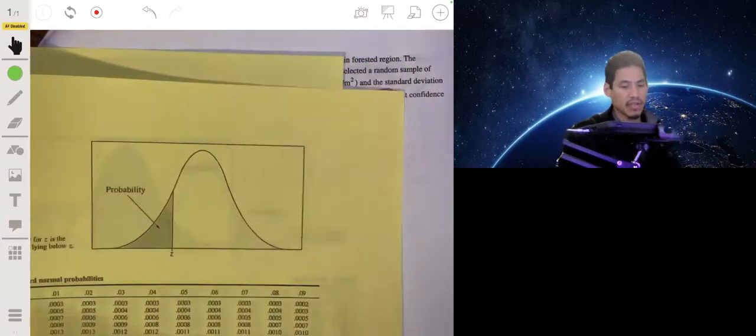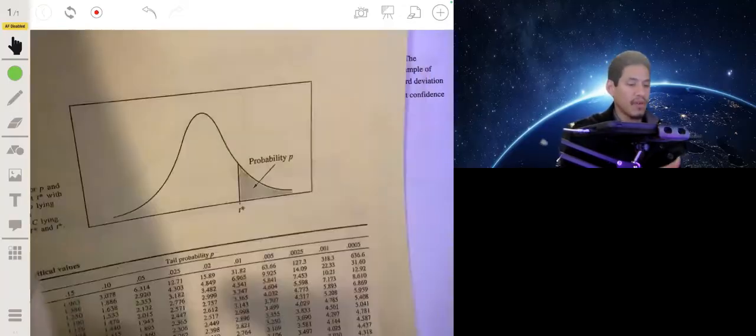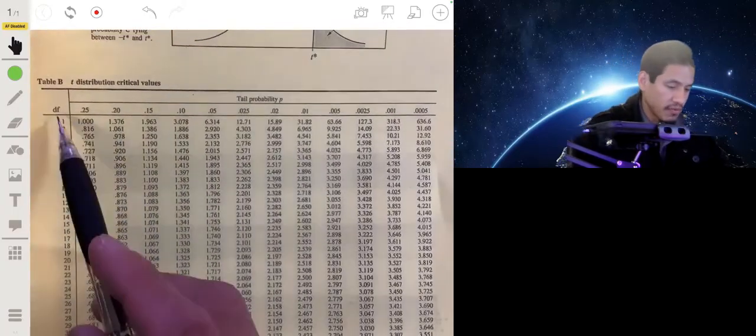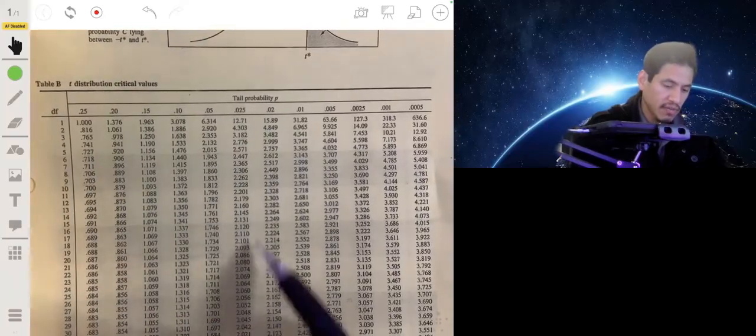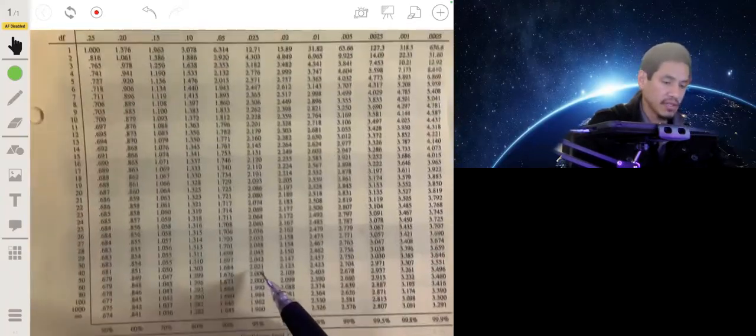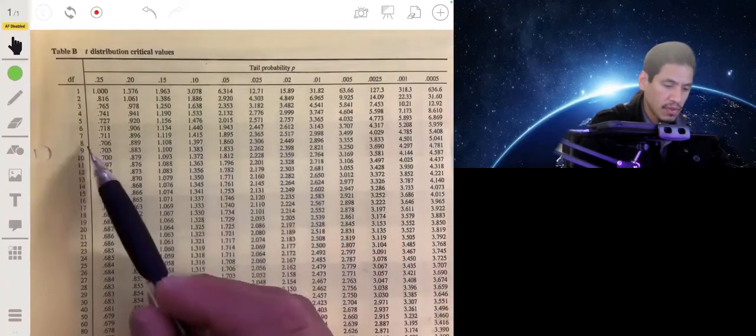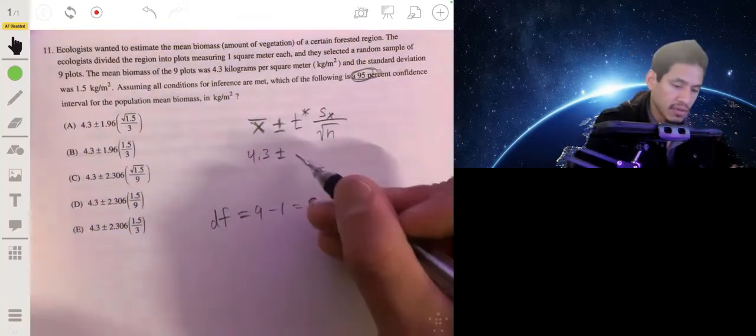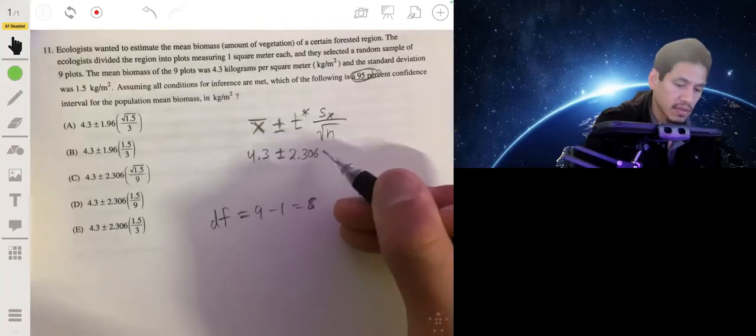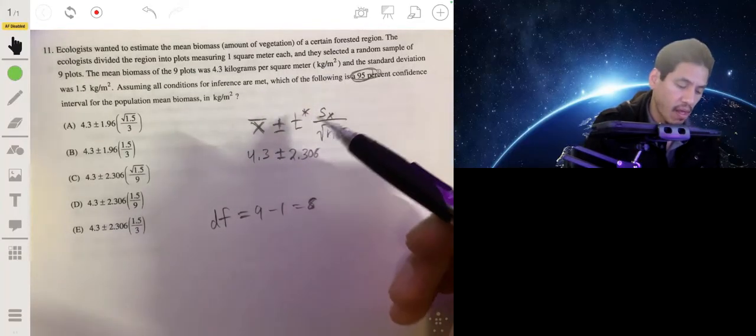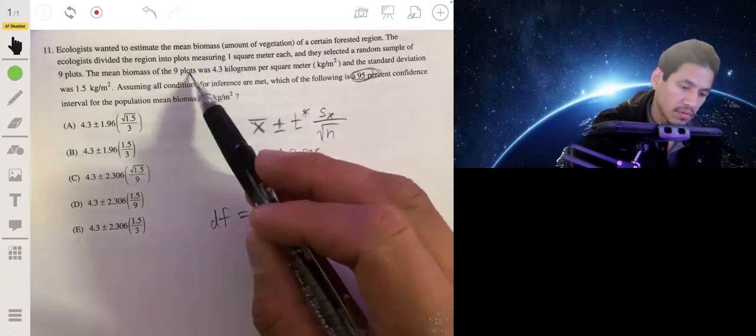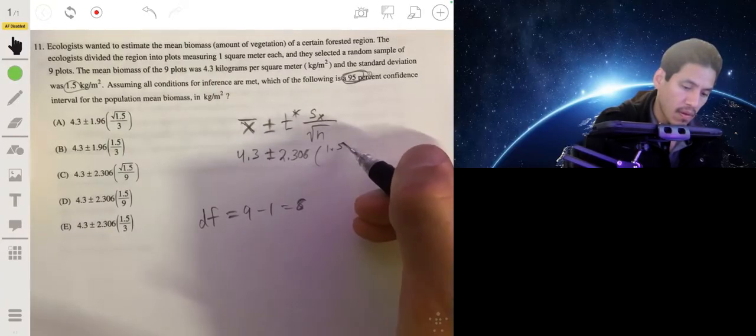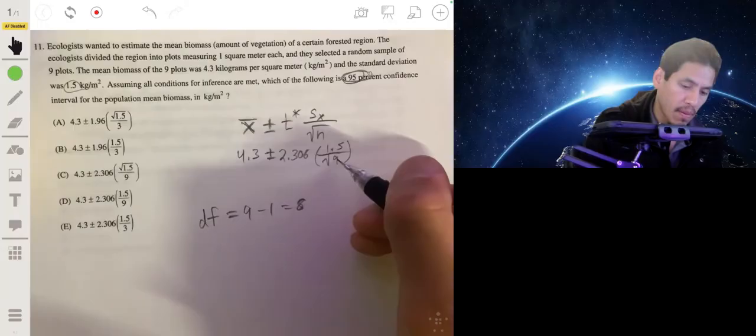So going to your table, my calculator doesn't have the function to just straight up calculate it. Some calculators do, but you would go to degrees of freedom eight and see 95% confidence interval right here. So we look at this row, or this column, zoom across, and our value would be 2.306. So our T star would be 2.306. Sample standard deviation is 1.5, and that would be divided by the square root of nine, which is just three.